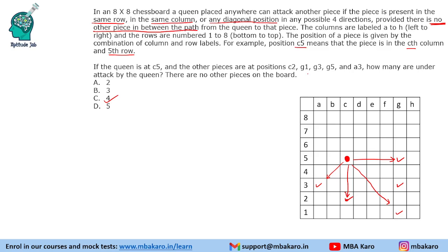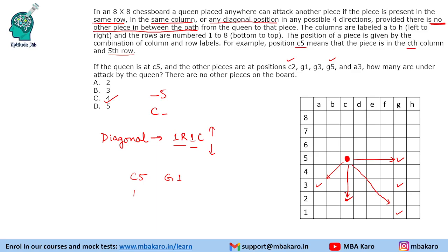Could this question have been answered without drawing the diagram? Yes. We know the queen can attack in the same row, so anything ending in row 5 will be attacked — G5 is attacked. In the same column C, C2 is attacked. For diagonals, if the number of rows and columns difference is the same, it will be under attack. For C5 and G1, rows differ by 4 and columns differ by 4 — so G1 is under attack.